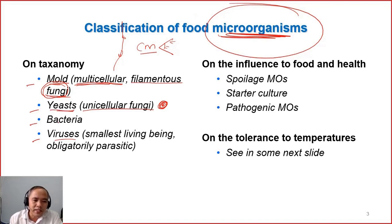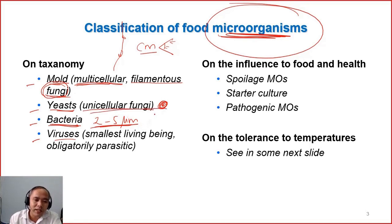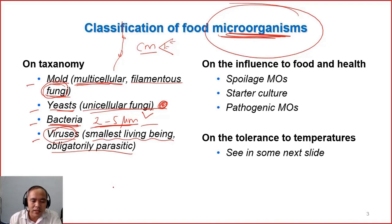Yeast and bacteria — the size of bacteria can be like 2 to 5 micrometers, for example. We cannot see them with our eyes; we have to use a microscope. The size of yeast can be like 10 to 20 times higher than that of bacteria. We cannot see yeast with our naked eyes either. Viruses are even much smaller — the smallest living beings that humans know. They are obligatorily parasitic, meaning they cannot multiply themselves in a medium even if you give nutrients to them. They can only multiply when they contaminate into a host cell, so they need a host cell to grow.